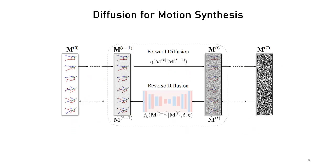DMMs have been successfully used to synthesize high quality and realistic images, point clouds, and audio signals. In this work, we demonstrate for the first time how they can be employed for 3D human motion synthesis.